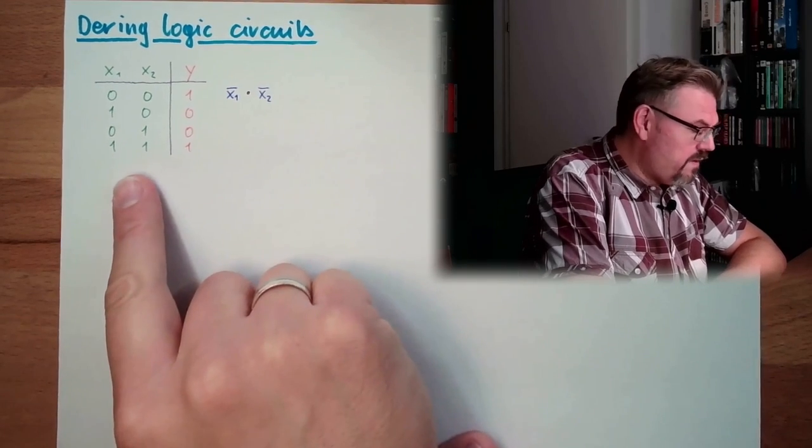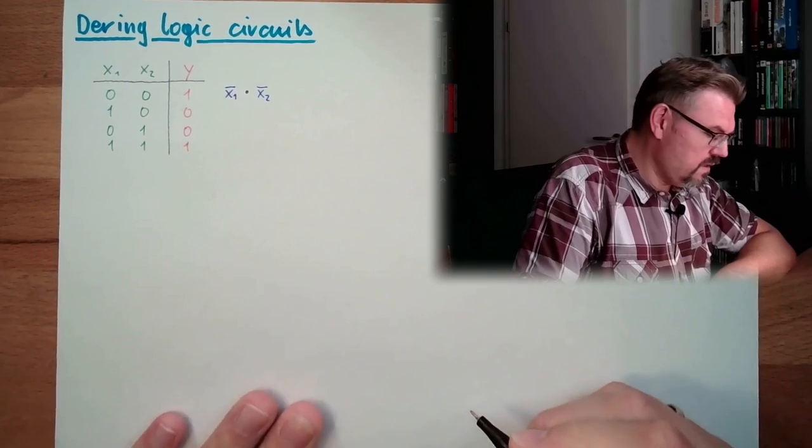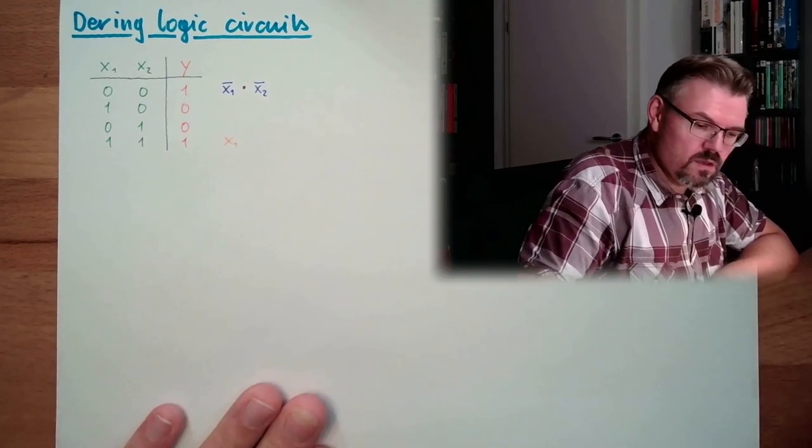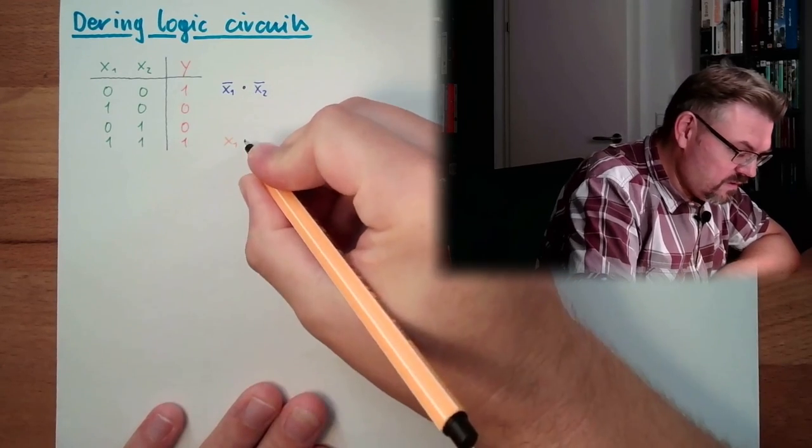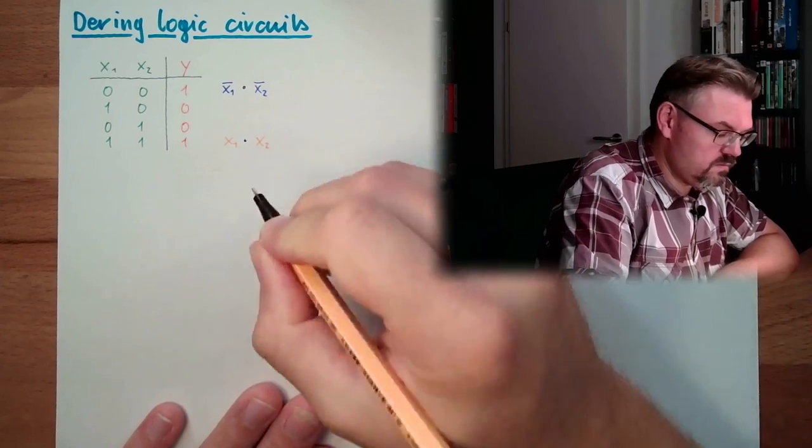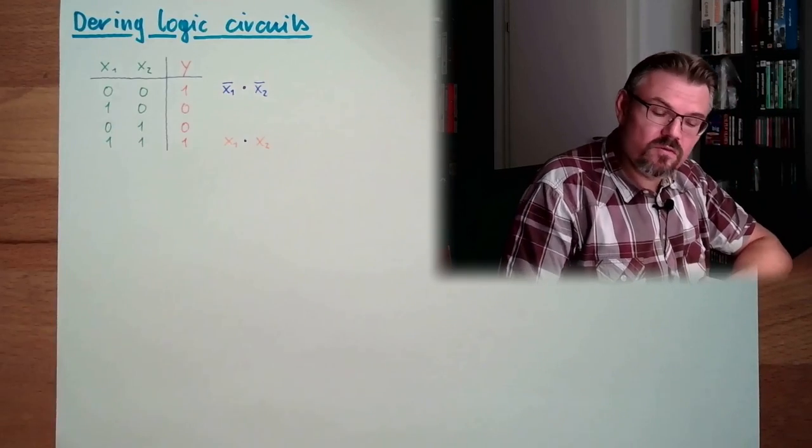And here, what have we here? I'm going to use another color. Here we have, it must be x1. x1 and x2. All right? Those two things need to happen.